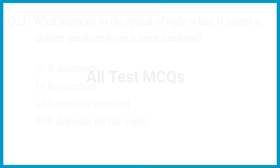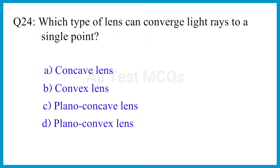Question number 24. Which type of lens can converge light rays to a single point? The correct answer is option B. Convex lens.